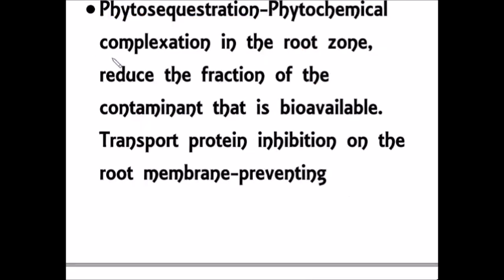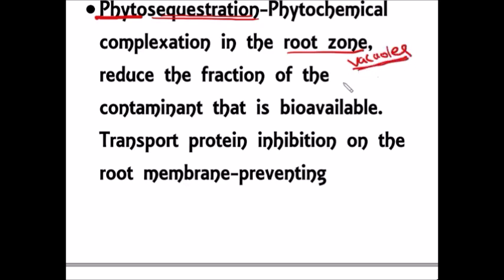Another important mechanism in phytoremediation is phytosequestration. Phyto means plant; sequestration means taking something and arresting it so it cannot be released into the food chain. In the root there are many cells or root vacuoles. Pollutants are absorbed and kept arrested in the root vacuoles, so the substances will not reach the plant biomass or leaves, and the pollutants may not reach the food chain.